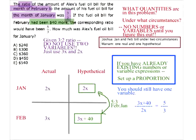If you cross-multiply this proportion — (3x + 40) / (2x) = 5/3 — you get 9x + 120 = 10x. So that means x = 120. And therefore Alex's fuel oil bill for January is 2x = $240.